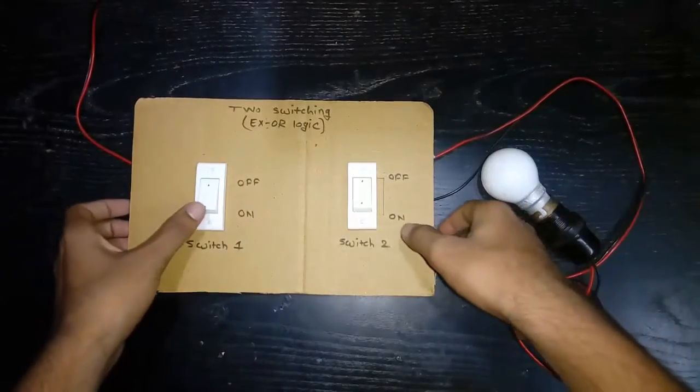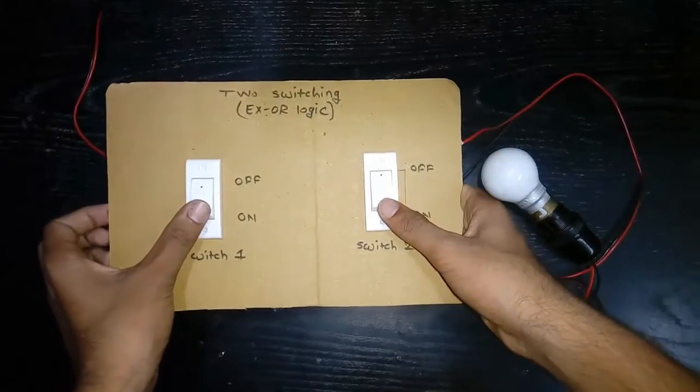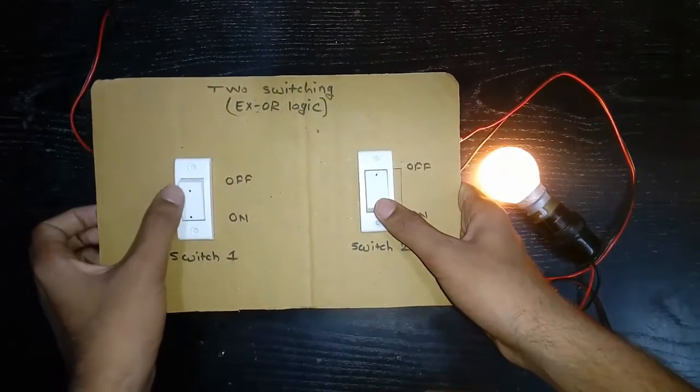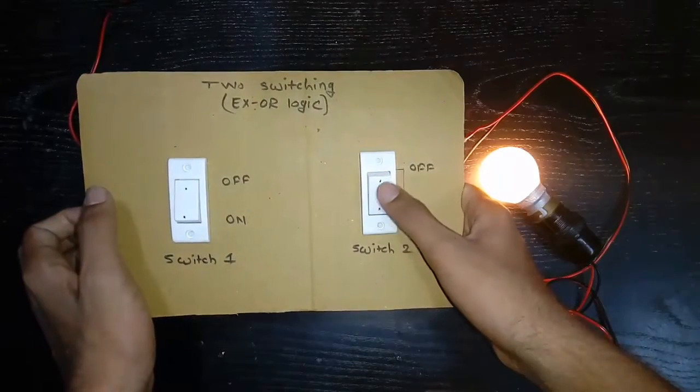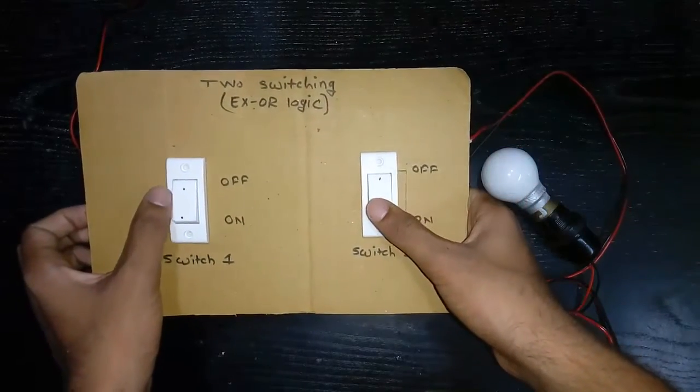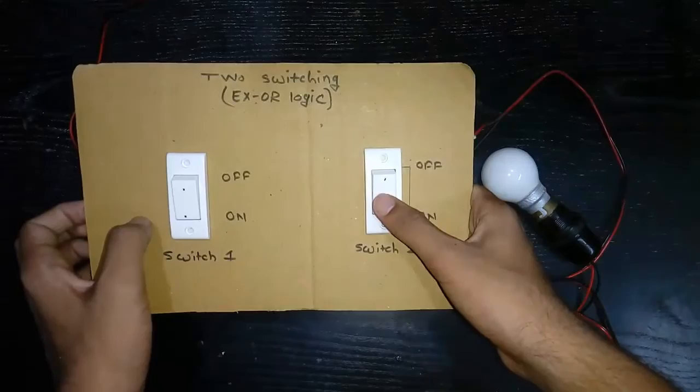Two-way switching for XOR logic. When switch 1 is on, the bulb is on. When switch 2 is on, the bulb is on. When both switches are on, the bulb is off.